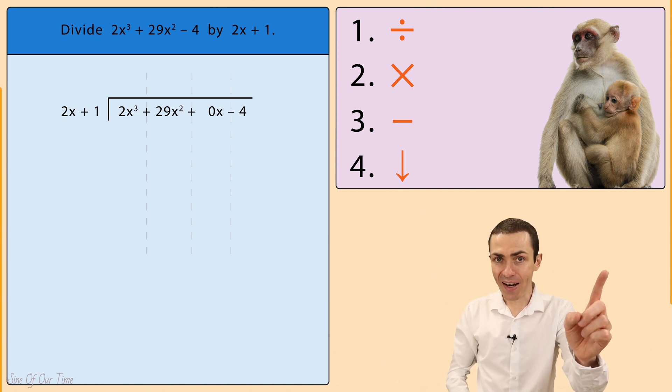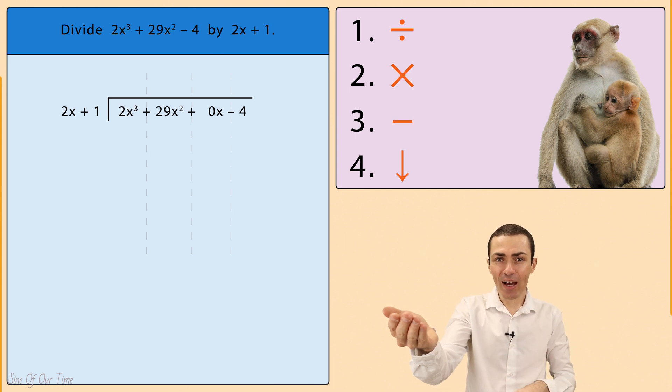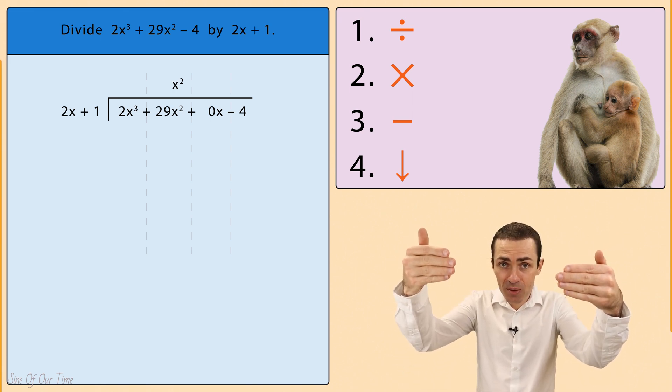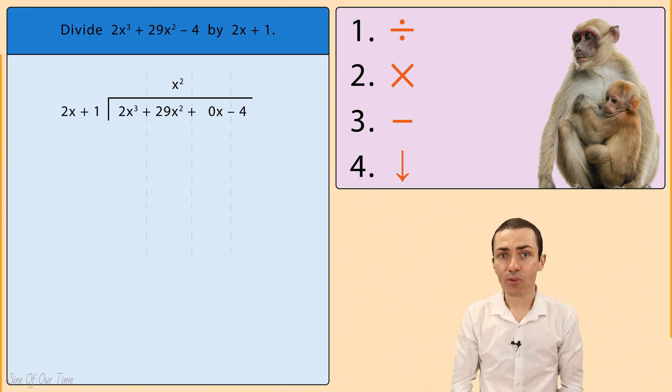Time for step 1: Divide. We take that 2x cubed and we divide by 2x in order to give us x squared, which we put above the long division symbol in the column reserved for x squareds.